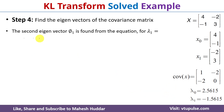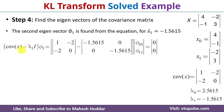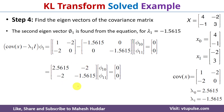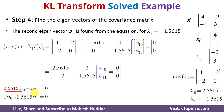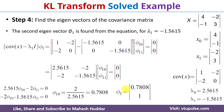Next we find the second eigenvector φ1 using lambda 1 = -1.5615. Substituting into the eigenvector equation and simplifying, we get the matrix equations: 2.5615·φ10 - 2·φ11 = 0 and -2·φ10 - 1.5615·φ11 = 0. Using the first equation: φ10 = 2·φ11 / 2.5615. Assuming φ11 = 1, we get φ10 = 0.7808. So the second eigenvector φ1 equals [0.7808, 1].